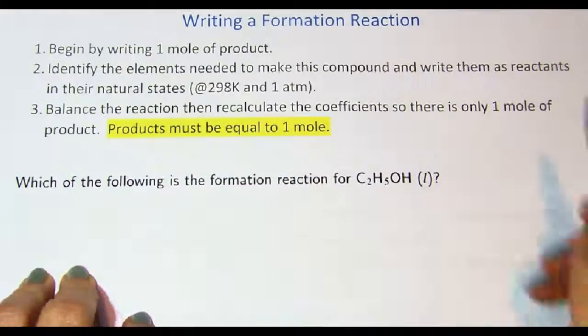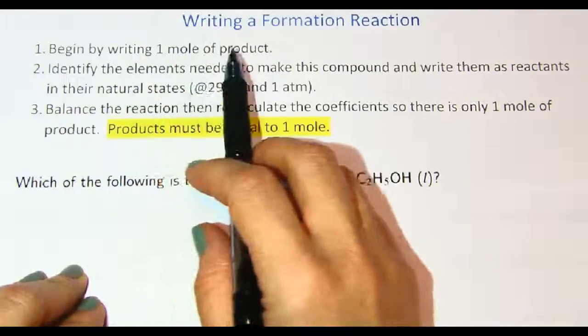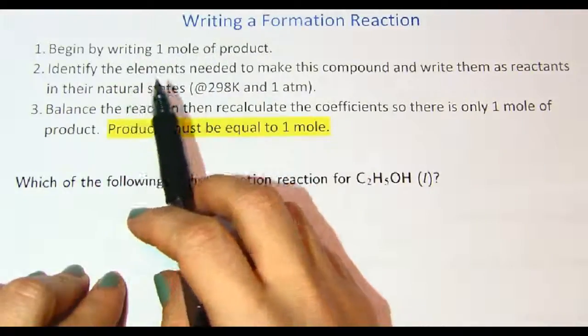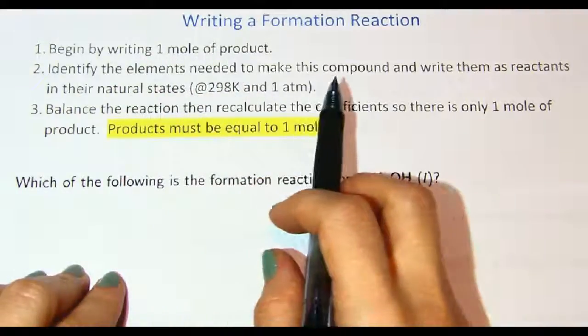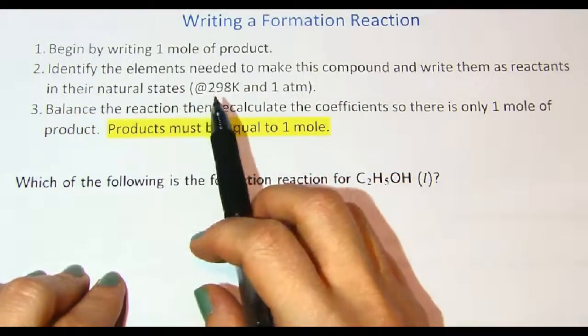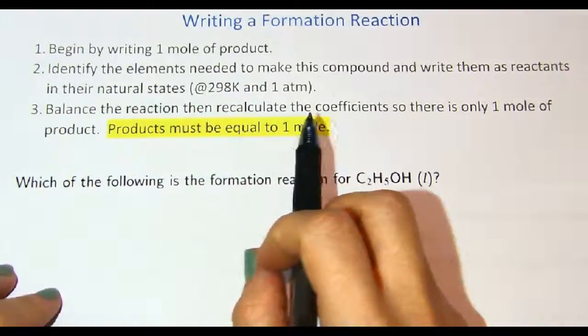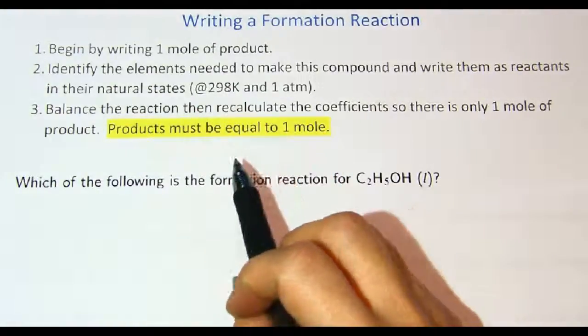Writing a formation equation or reaction, begin by writing one mole of product, then identify the elements needed to make up the compound and write them as reactants in their natural states. Balance the equation, then recalculate the coefficients so there's only one mole of product.